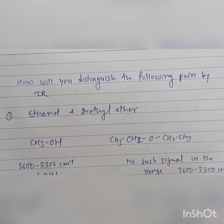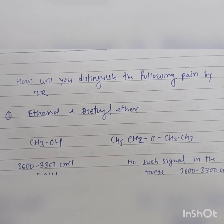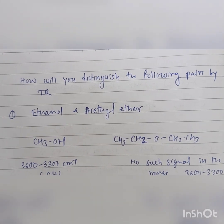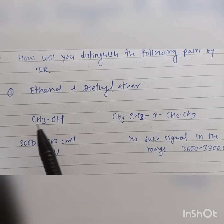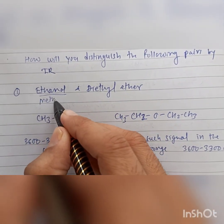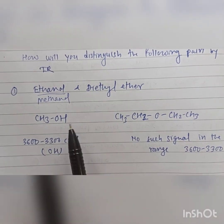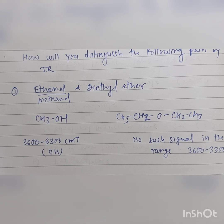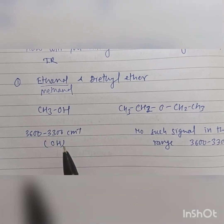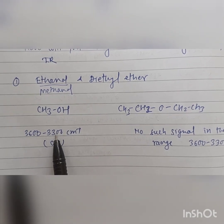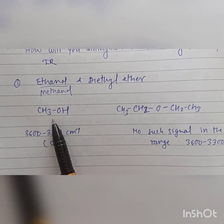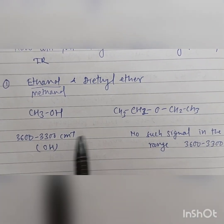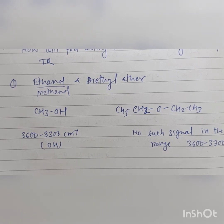We will see one example — how will you distinguish the following pair by IR: ethanol and diethyl ether. Ethanol is CH₃OH and diethyl ether is CH₂CH₃OCH₂CH₃. We know that there is a characteristic absorption at 3600 to 3300 centimeter inverse for the OH group, which will be present in ethanol. But such a peak will be absent in diethyl ether. So we can definitely identify which compound is the alcohol and which is the ether.